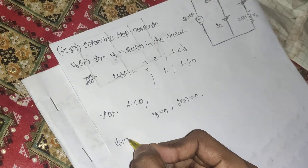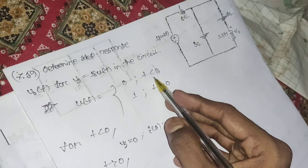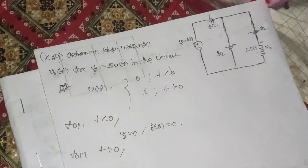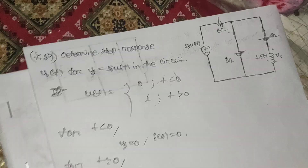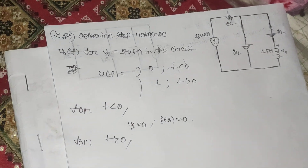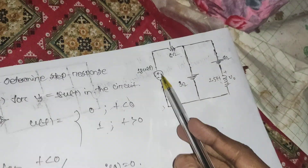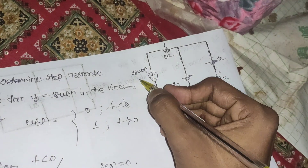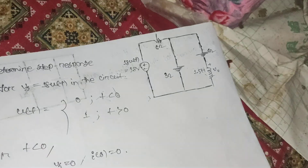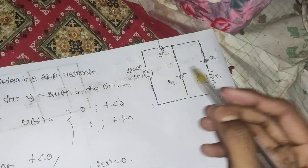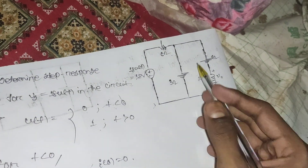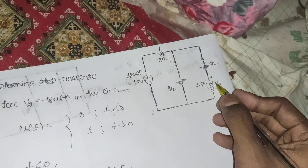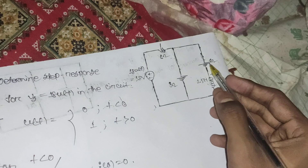For t greater than 0, u(t) goes to 1 and the circuit is in steady-state mode. The voltage source becomes 18 volts. In steady-state, we replace the inductor as a short circuit.